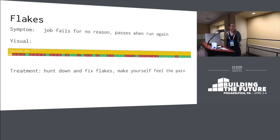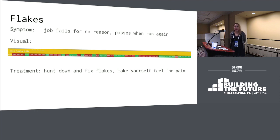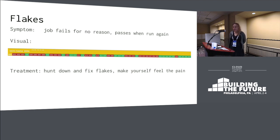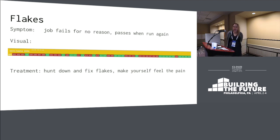Here's a good one: flakes. This is a picture of an actual pipeline, and all those red jobs — those aren't actual failures. We were having some real networking issues, and things were just dying because the network would drop the connection. It's not good, because if you have flakes, you learn to ignore them. You're like, it's fine, I'll just run it again — and you can hide real problems. So you really always need to investigate them.